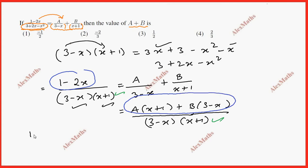1 minus 2x is equal to A into (x plus 1) plus B into (3 minus x).